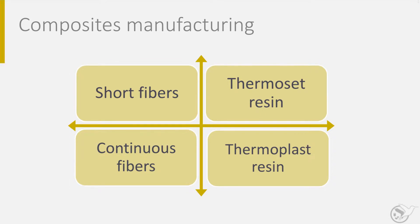The fiber length can be split into three groups: short, long, and continuous fibers. Short fibers have a length in the order of millimeters, the length for long fibers is about 10 centimeters, and the length for continuous fibers is a meter or longer.